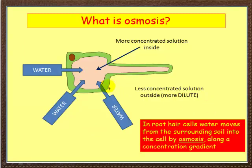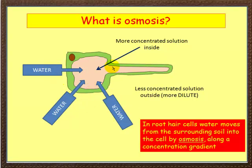Let's look at one of these in practice. Here is a root hair cell — this is a root of a plant, very, very long and thin. Inside the root hair cell you've got a concentrated solution, i.e. less water. On the outside you've got a less concentrated solution, which means more water, more dilute. In root hair cells, water moves from the surrounding soil into the cell by osmosis. There's more water out here than in there, so water will move through the cell membrane — the cell membrane is our partially permeable membrane — from outside to inside the cell.